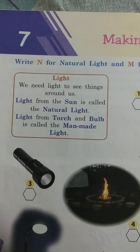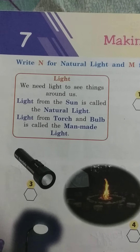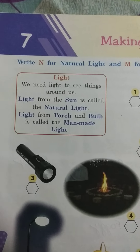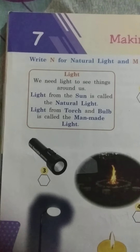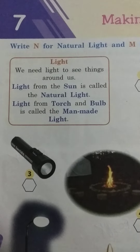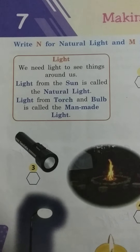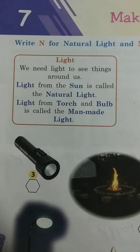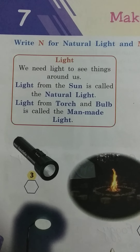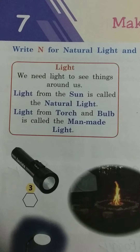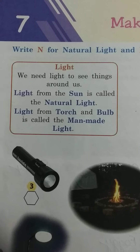Light can be natural or man-made. Do tarah ki light hoti hai — natural ya man-made. Now what is natural light? Light that we get from the sun is called natural light. And the light that we get from a torch, bulb, etc. is called man-made light.